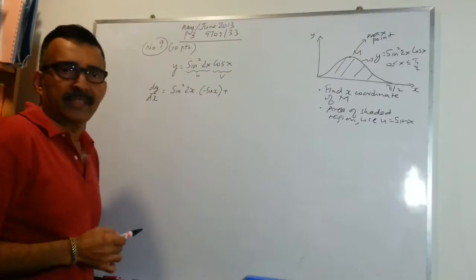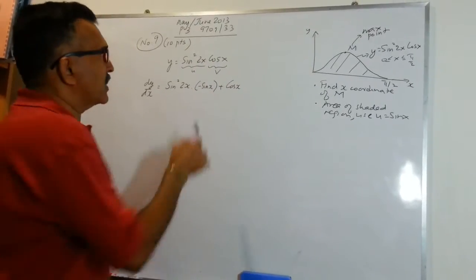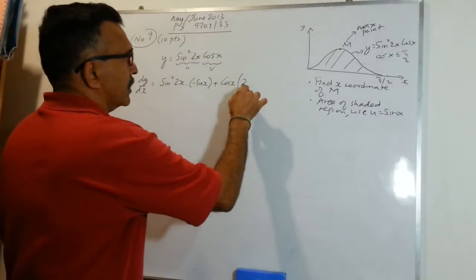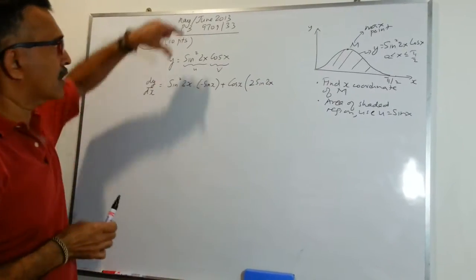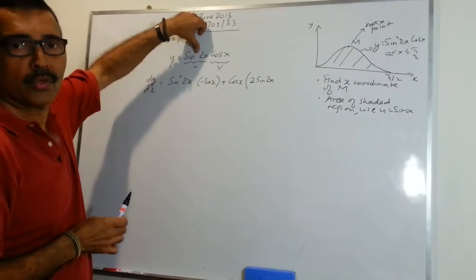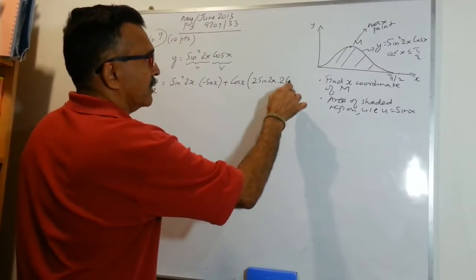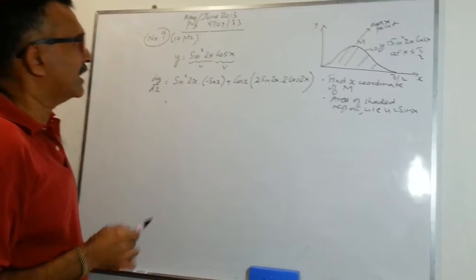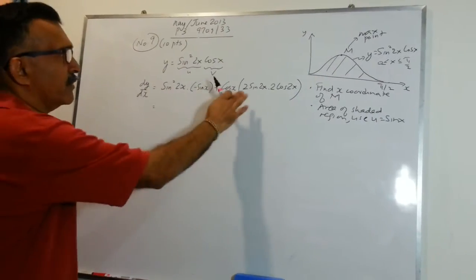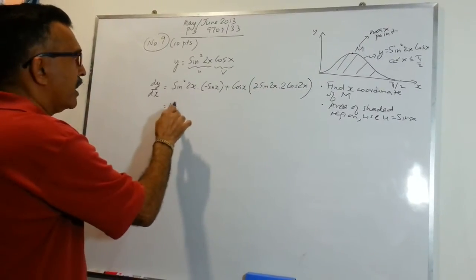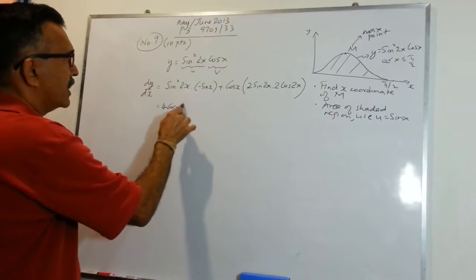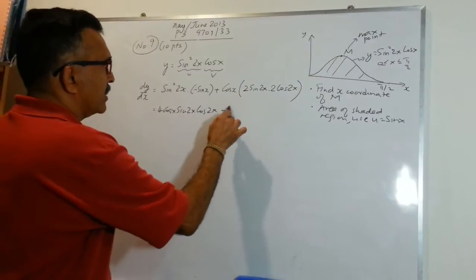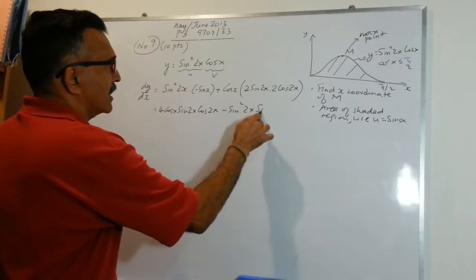Write down the second term, cos x, and then differentiate the first term. When you differentiate sin squared 2x, we bring the power down, reduce the power by 1, and then differentiate sin 2x to get 2 cos 2x. So dy/dx equals 4 cos x sin 2x cos 2x minus sin squared 2x sin x.